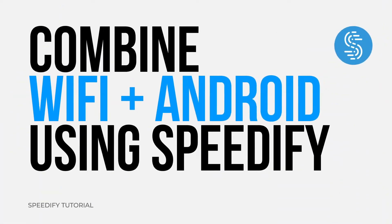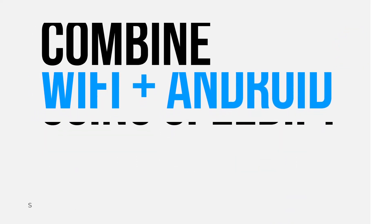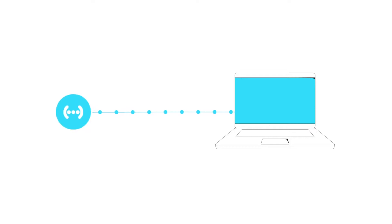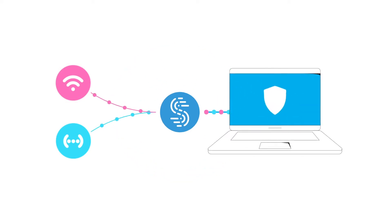Hi, I'm Ryan from Connectify, and in this video we're going to look at how you can use Speedify to combine your Wi-Fi connection with a tethered Android smartphone. Speedify is an intelligent VPN that can combine Wi-Fi and cellular on your laptop or smartphone. Speedify detects when one of those connections is weak, then it seamlessly transfers your traffic to the other stronger connection, so you never have to deal with dropped calls and interrupted video again.